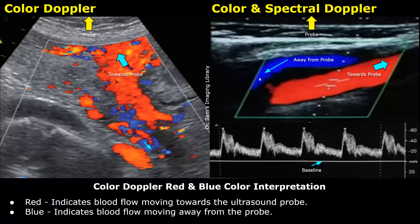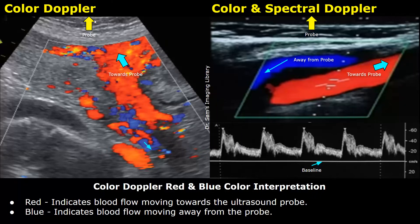The colors are determined based on their relation to the ultrasound probe. By standard orientation, the ultrasound probe is always towards the top of the image, so this top point is taken as the observer. When blood in a blood vessel is flowing towards the probe, by default the color will be red.